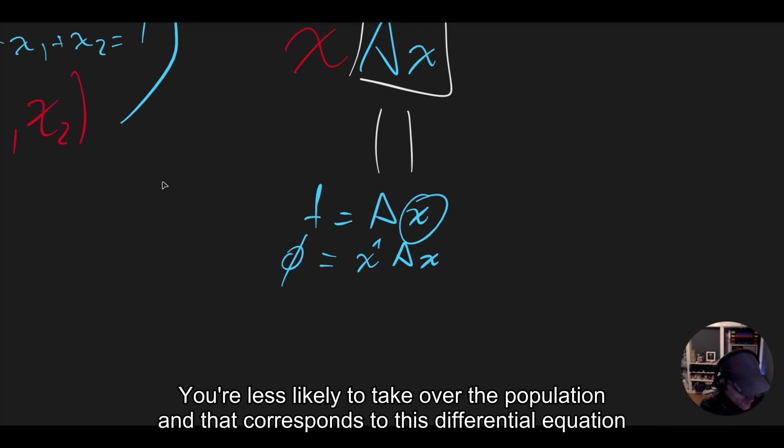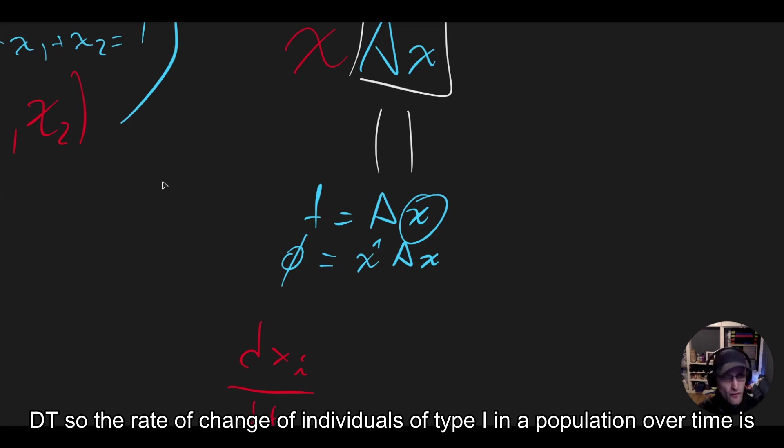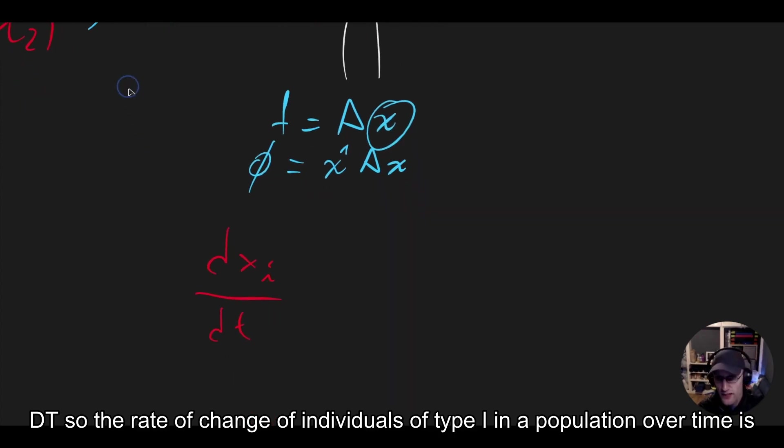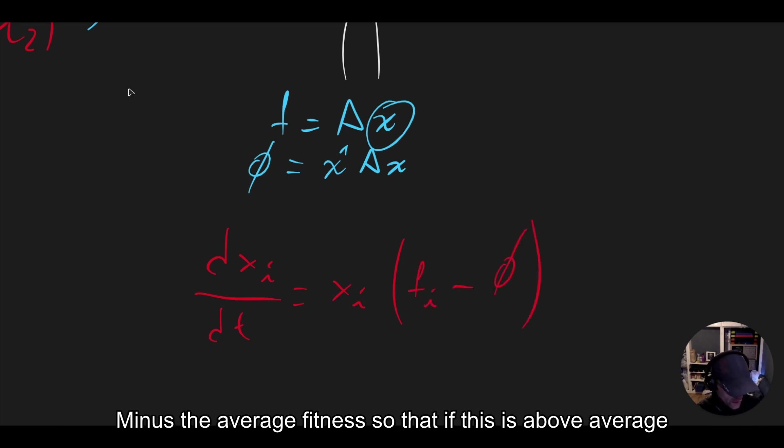And that corresponds to this differential equation, which is that dxi dt. So the rate of change of individuals of type i in a population over time is equal to the amount of individuals times those individuals' fitness minus the average fitness.